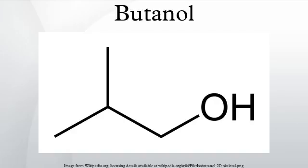Butanol isomers, due to their different structures, have somewhat different melting and boiling points. N-butanol and isobutanol have limited solubility, sec-butanol has substantially greater solubility, while tert-butanol is fully miscible with water.